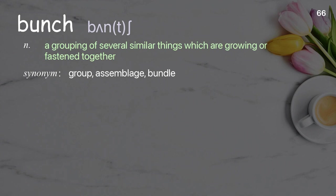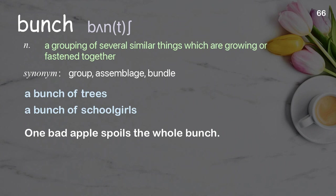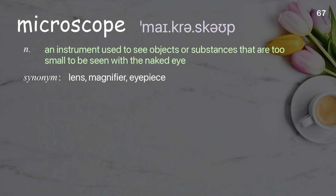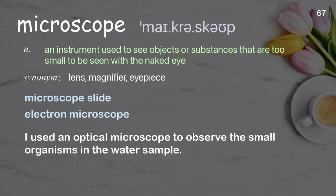Bunch: a grouping of several similar things which are growing or fastened together. Examples: a bunch of trees, a bunch of school girls. One bad apple spoils the whole bunch. Microscope: an instrument used to see objects or substances that are too small to be seen with the naked eye. Examples: microscope slide, electron microscope. I used an optical microscope to observe the small organisms in the water sample.